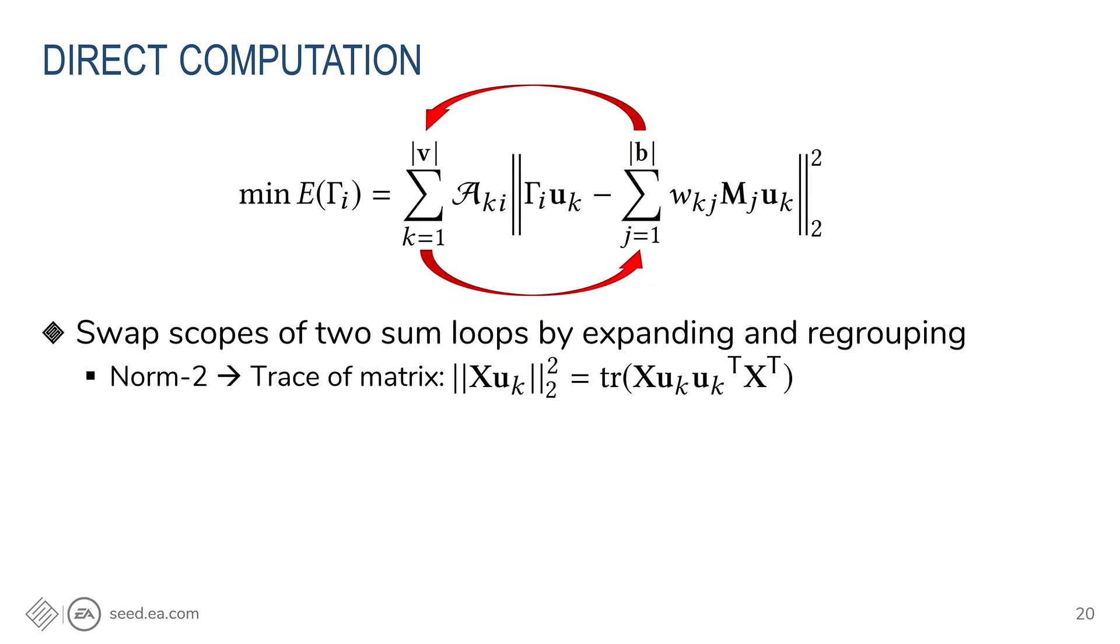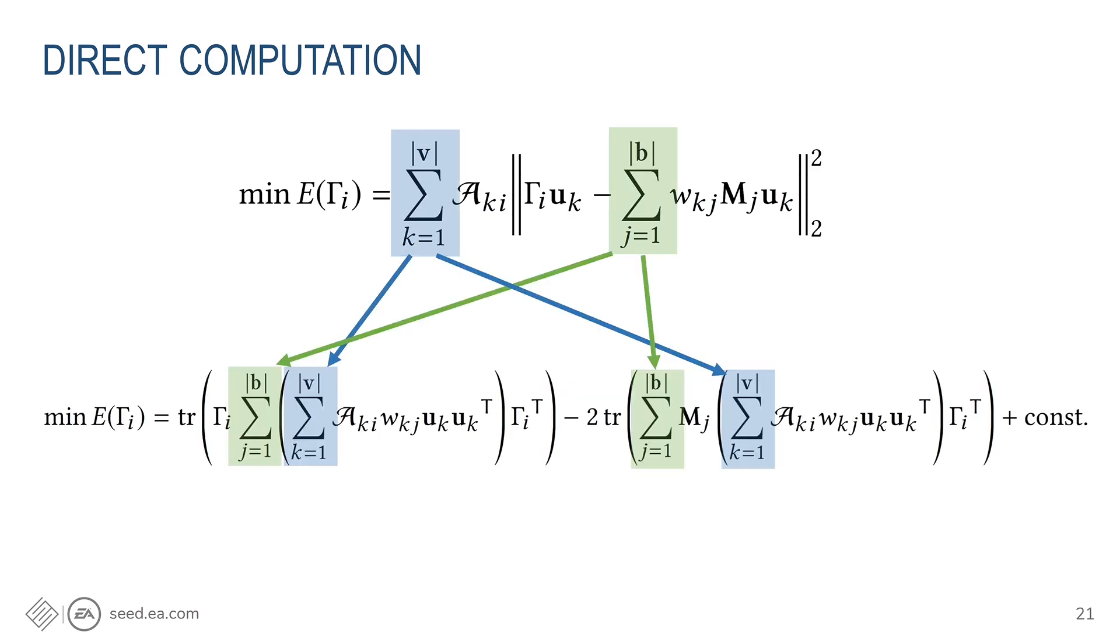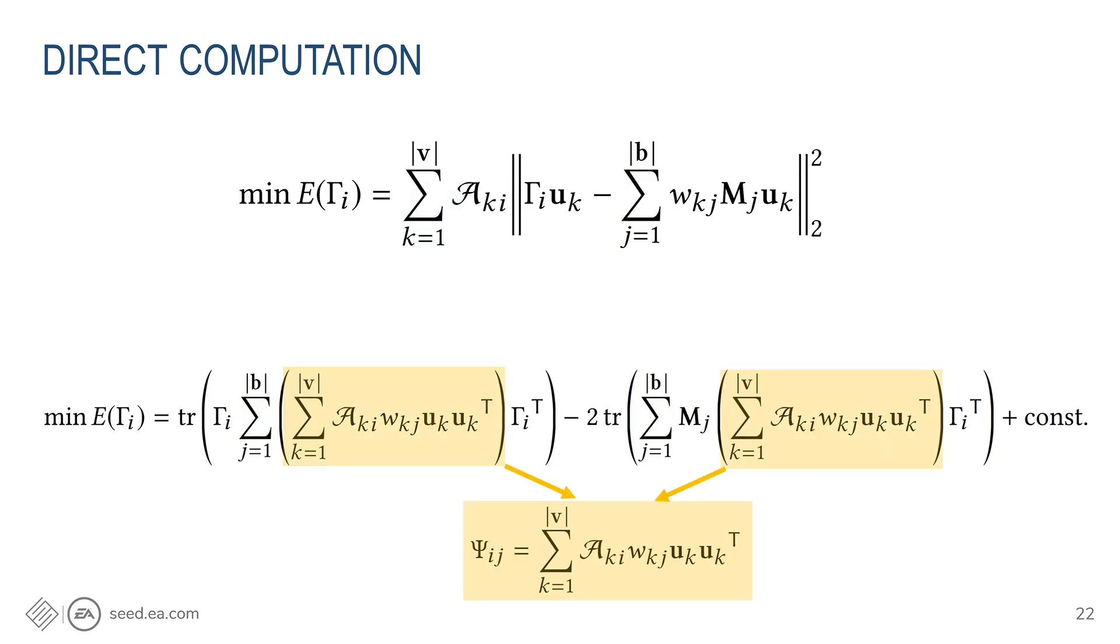Instead of doing that, we try to rewrite this expression so we can swap the scope of two loops. We expand the nested sum and regrouping the terms by the bone transformation M_j. Here we use a small trick of rewriting the norm 2 by the trace of the matrix. With expanding and regrouping, here's what we end up with. Now the two sum loops have been swapped. And please don't try to read the equation, just look at the color blocks, it's easier. And another thing you might notice is that by regrouping the sums, now the two inner sum loops are the same, and their values are constant, regardless of all bone transformations. That means we can precompute and cache this.